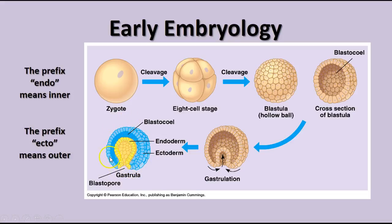We call the outer cell layer the ectoderm and the inner cell layer the endoderm. As time goes on, the embryo develops further and you end up with three layers of cells: the ectoderm, the endoderm, and the mesoderm. Then we begin to see other parts of the embryo starting to develop.